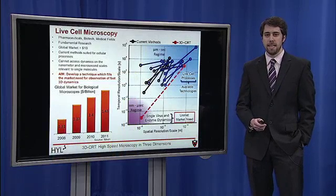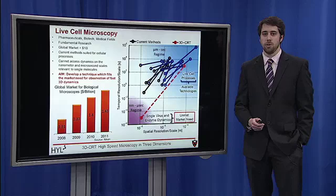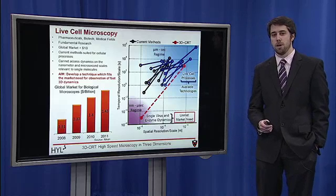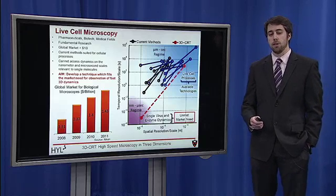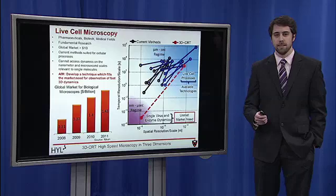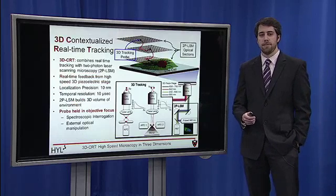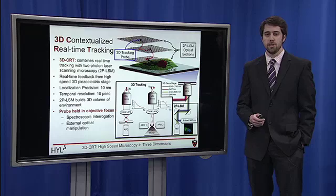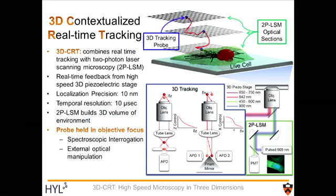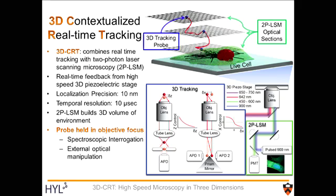Our aim is to create a 3D method which is able to bridge both of these regimes to enable the correlation of the behavior of single molecules with the larger scale cellular context. To fill this market need, we have developed three-dimensional contextualized real-time tracking, or 3DCRT, which is able to track the real-time 3D position of freely diffusing nanoscale particles while monitoring the large-scale volumetric context.